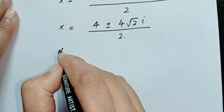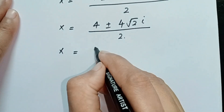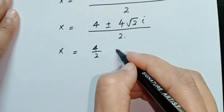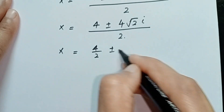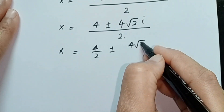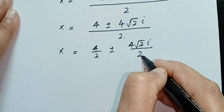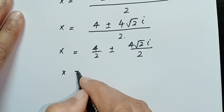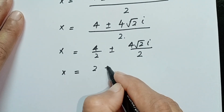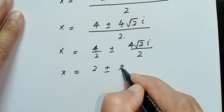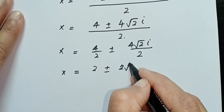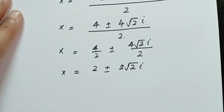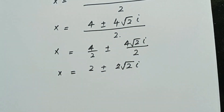Dividing each term by 2: x = 4/2 ± (4√2 · i)/2, which gives x = 2 ± 2√2·i. So from this quadratic we obtain two complex solutions.